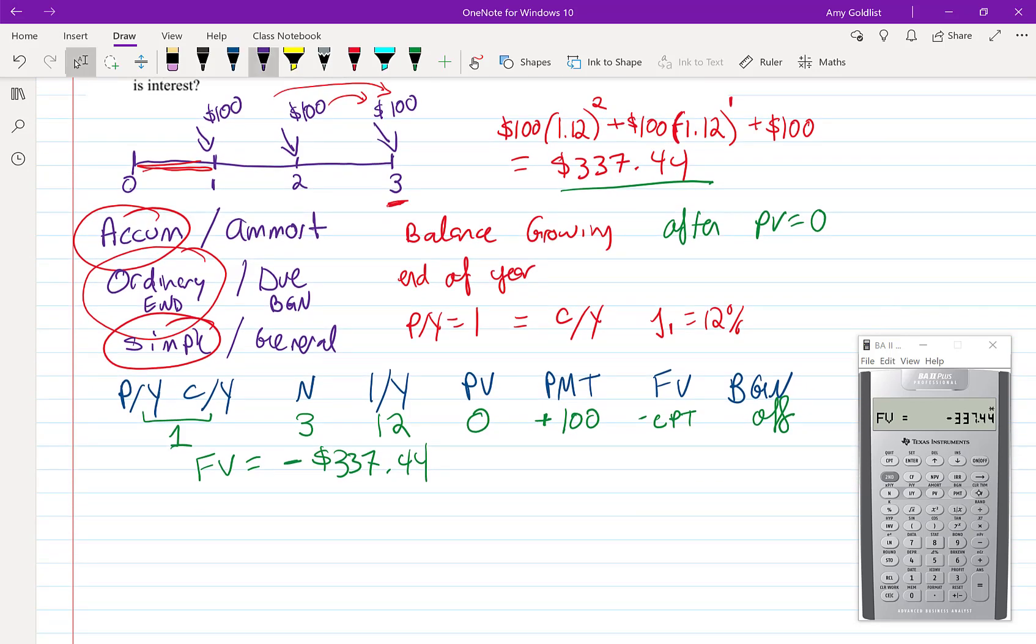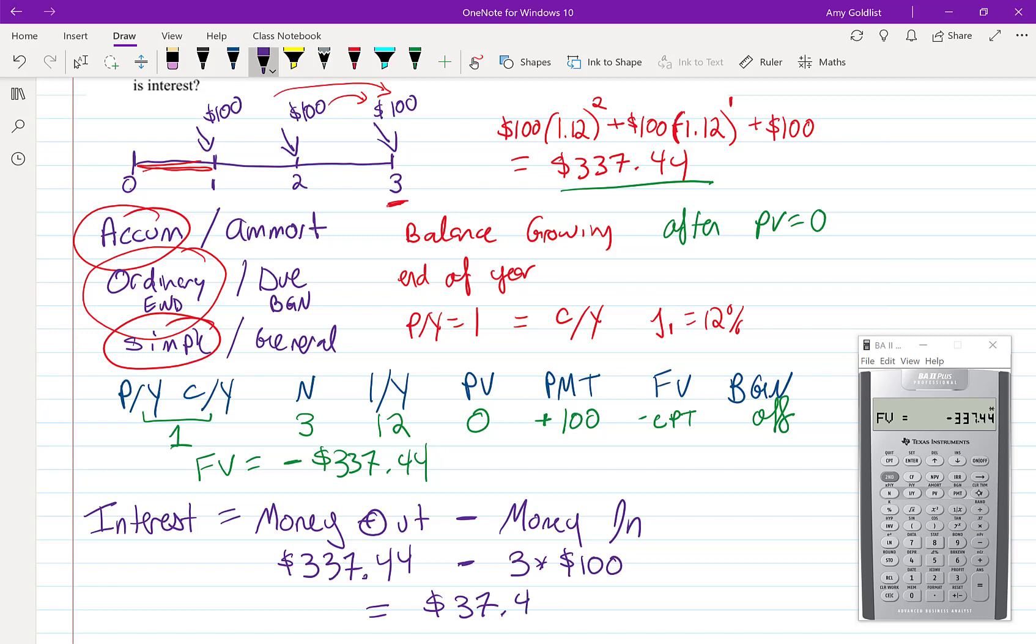Let's calculate the interest. Interest is money out minus money in, in a savings situation. How much money did I have at the end? Well, that was $337.44. Money in, that was three payments of $100. When I run that through a calculator or do it in my head, I get $37.44. That's how much interest I earned over the three years.